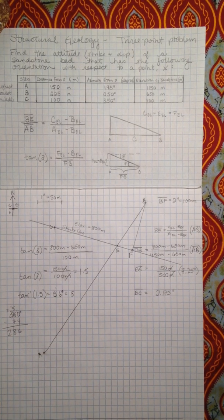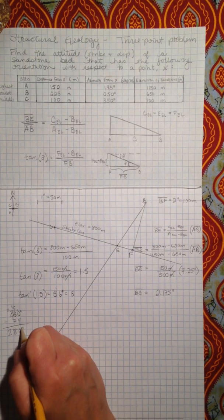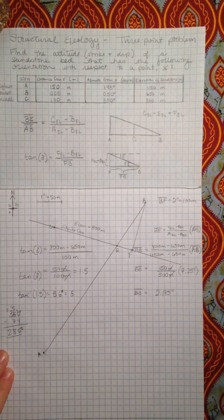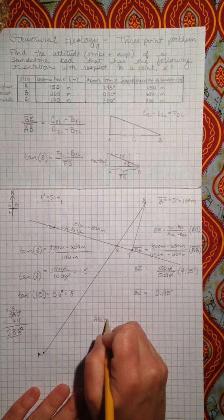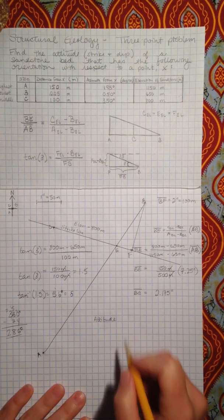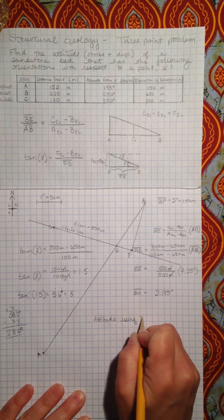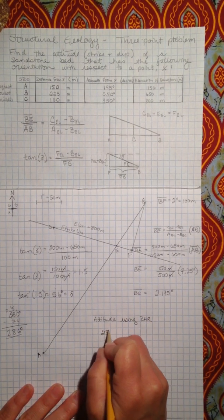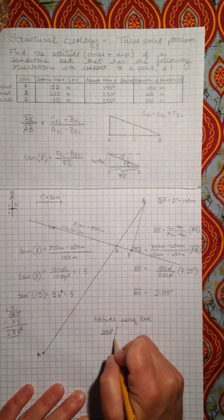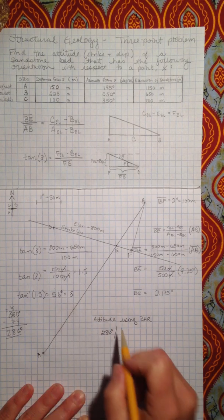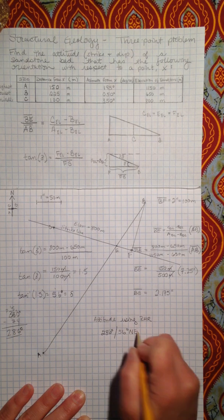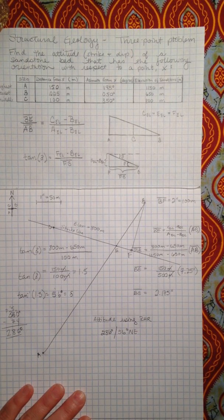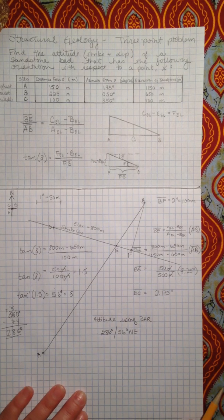So I need to just write out here my final answer. So the attitude using the right-hand rule is 286 degrees and 56 degrees to the northeast. And that's it. Thank you very much for your time and have a lovely day.